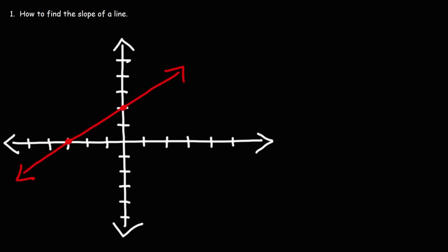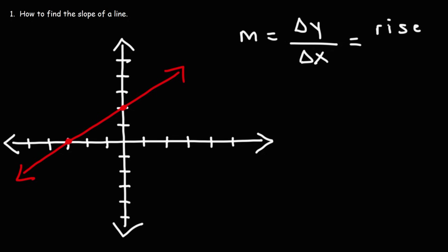In this video we're going to talk about how to calculate the slope of a line. The formula you need is M equals the change in Y divided by the change in X. The slope of the line can be calculated by taking the rise divided by the run.